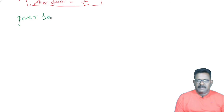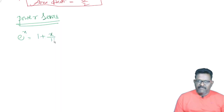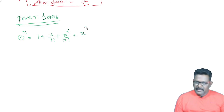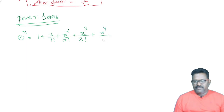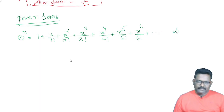e to the power x equals 1 plus x by 1 factorial plus x squared by 2 factorial plus x cubed by 3 factorial plus x to the power 4 by 4 factorial plus x to the power 5 by 5 factorial plus x to the power 6 by 6 factorial, and so on to infinity.